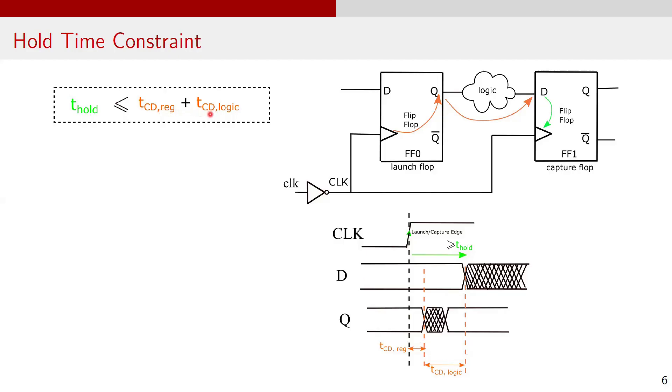This can be written in expression as t CD register plus t CD logic must be greater than t hold. This constraint ensures that the data at the D input of the capture flip-flop remains stable for at least the hold time after the clock edge. If any path in the design is too fast, it may violate this condition, meaning the data could change too soon after the clock edge, leading to hold time violation or race condition where the output of the capture flip-flop becomes unpredictable. So this is all for this video. I hope this helps you to understand setup and hold constraints in digital design.